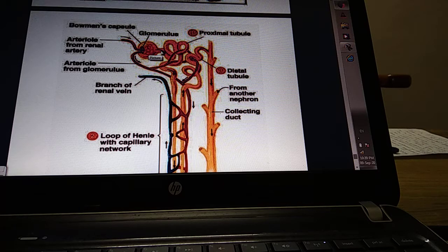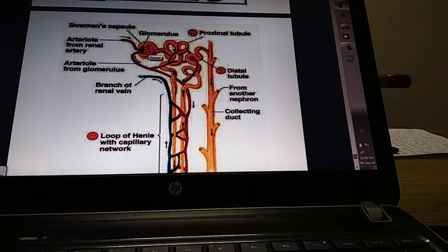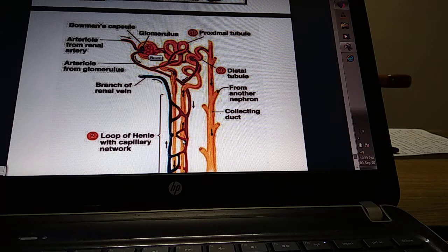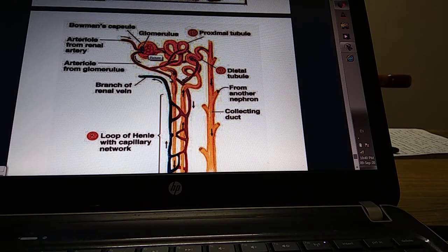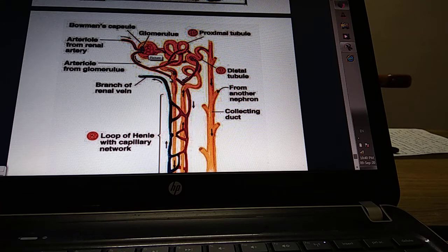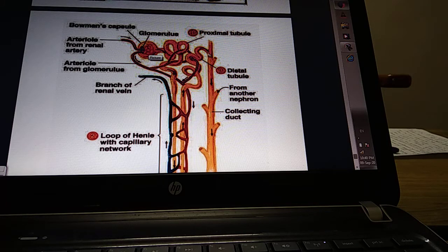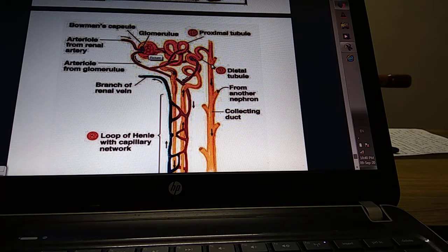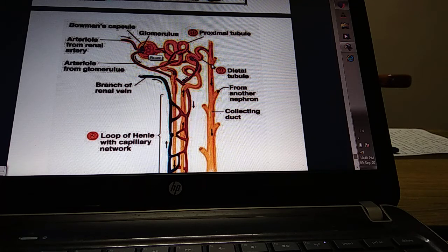The second step is tubular reabsorption. All the useful materials are reabsorbed on the way as it moves through the loop of Henle and distal convoluted tubule. Whatever useful materials are present are reabsorbed. The third step is tubular secretion. Some materials are added by the cells of the tubule into this filtrate. Here we call it filtrate, and when it reaches the end, we call it urine. On the way, many things are added. So the three steps are glomerular filtration, tubular reabsorption, and tubular secretion.